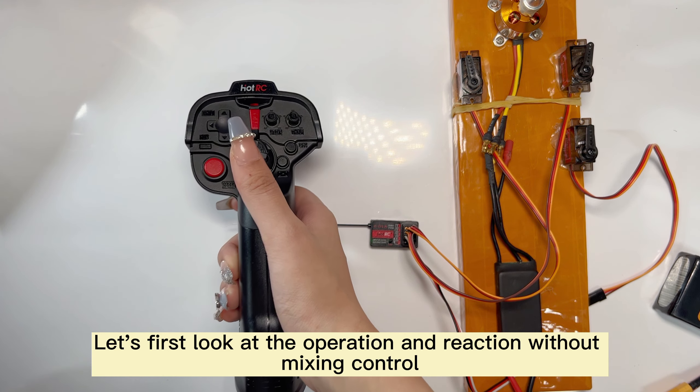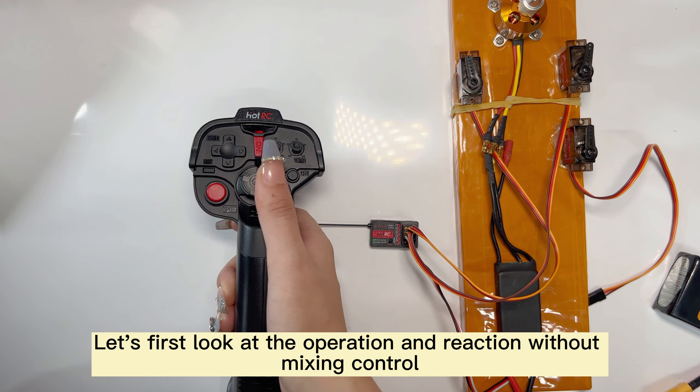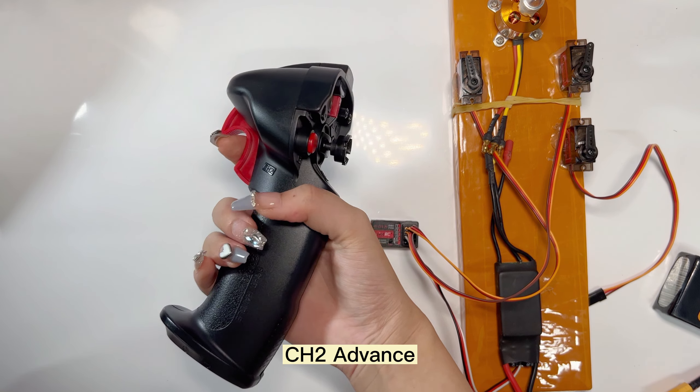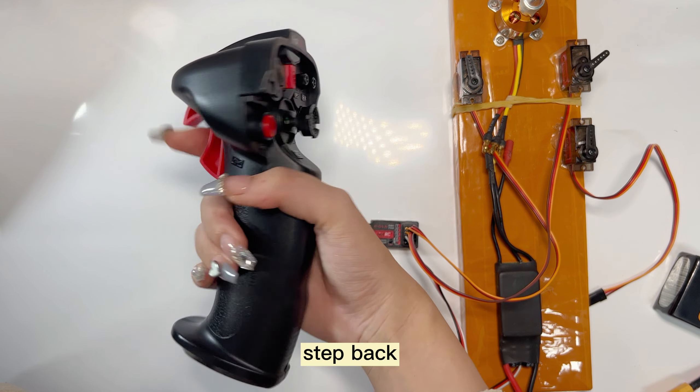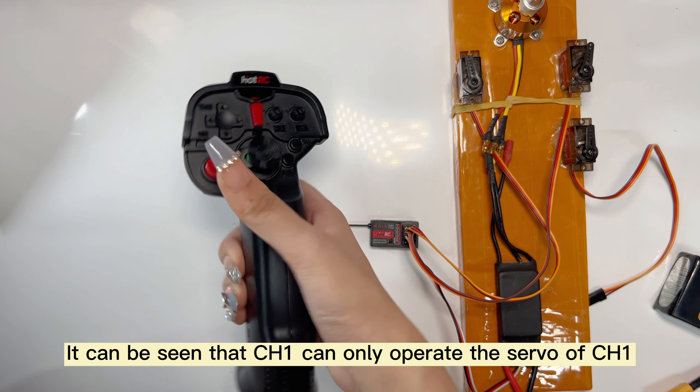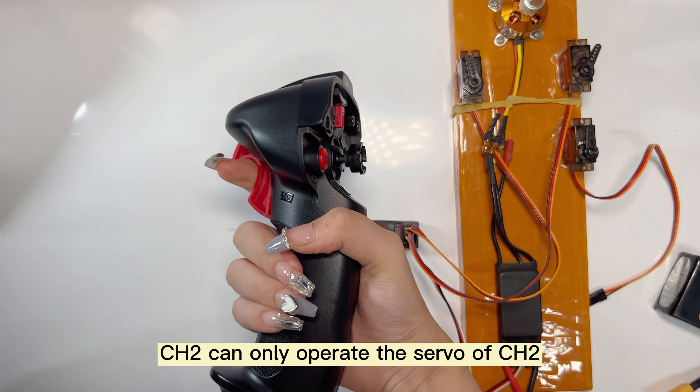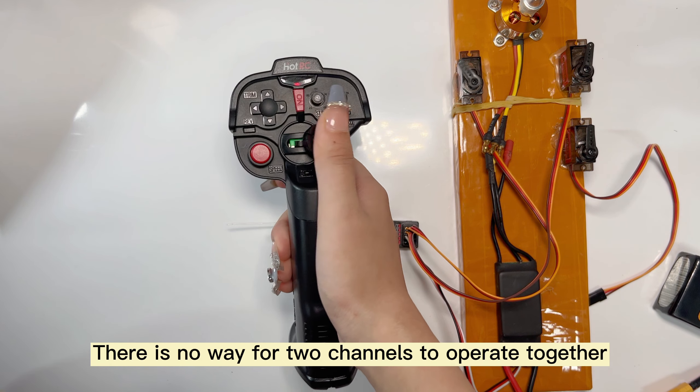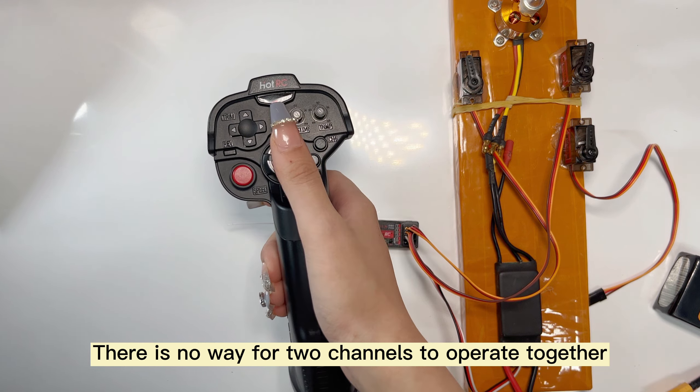Let's first look at the operation without mixing control. CH1 turn left, turn right. CH2 advance, step back. You can see that CH1 can only operate the servo of CH1, and CH2 can only operate the servo of CH2. There's no way for two channels to operate together.